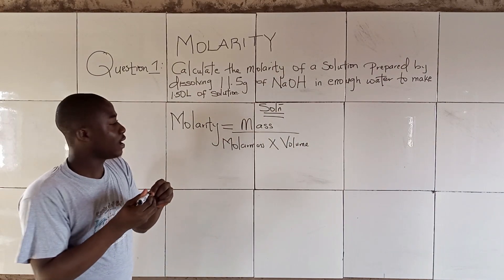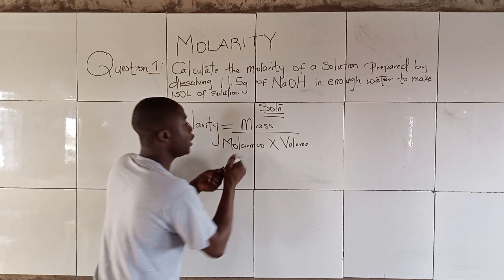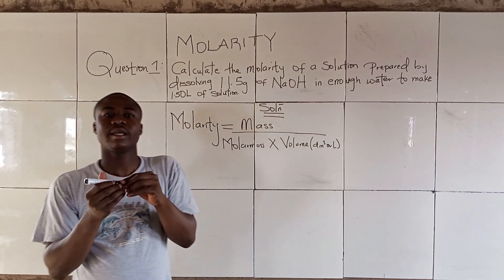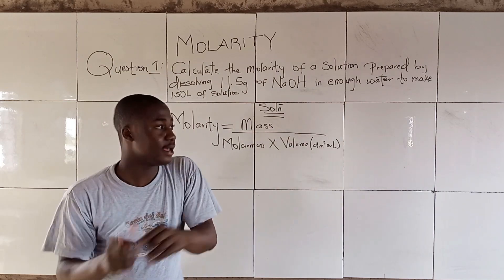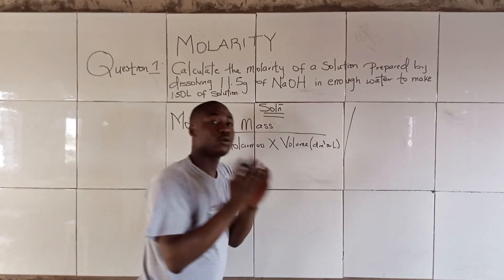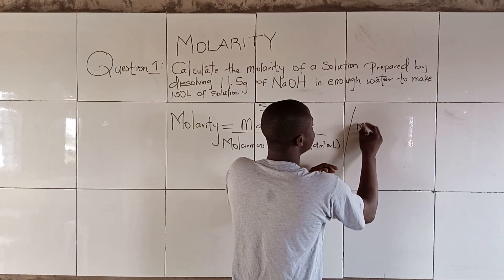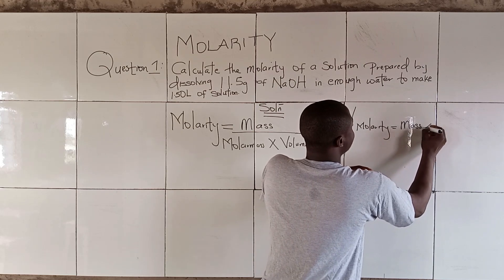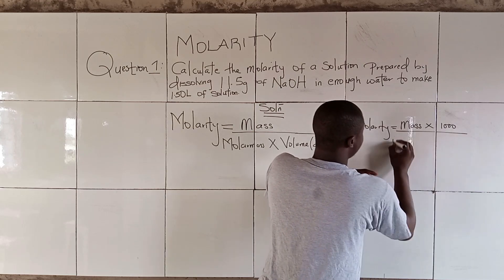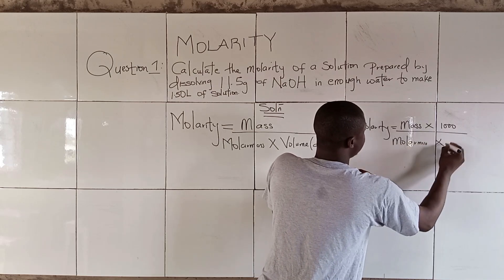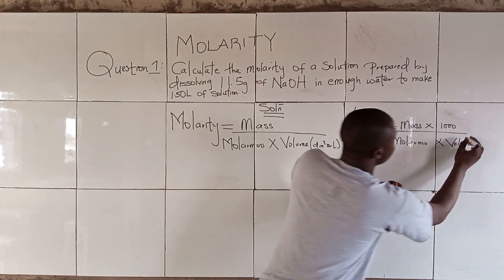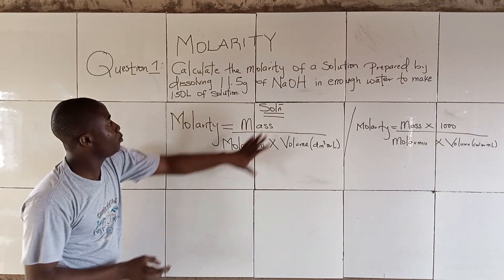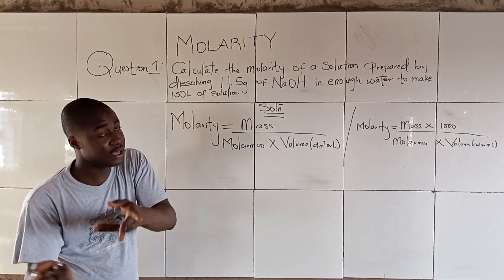In this context, the volume is in dm³ or liters. But if the volume were in cm³ or milliliters, our formula would include 1,000 — it becomes Molarity = (mass × 1,000) over (molar mass × volume in cm³ or mL). Since the volume here is in liters or dm³, we use the standard formula.